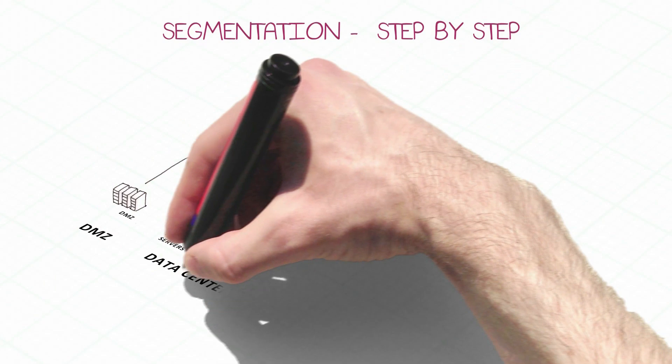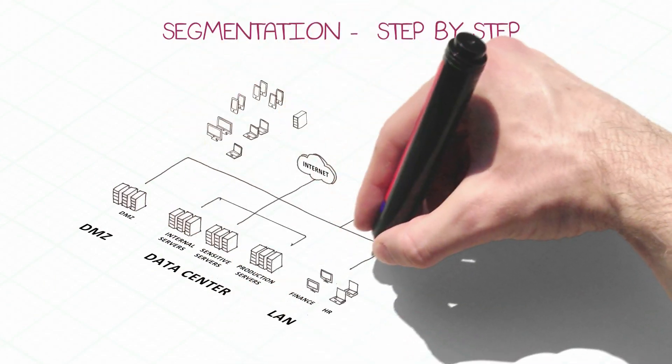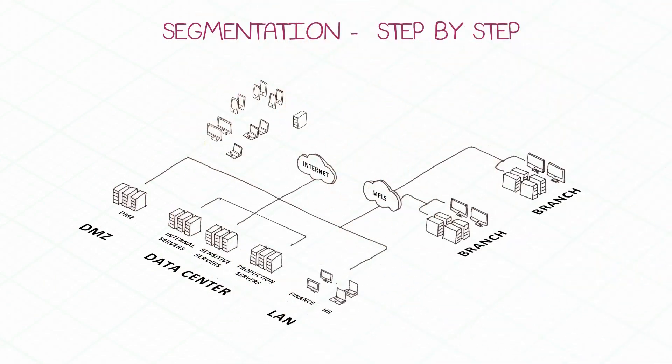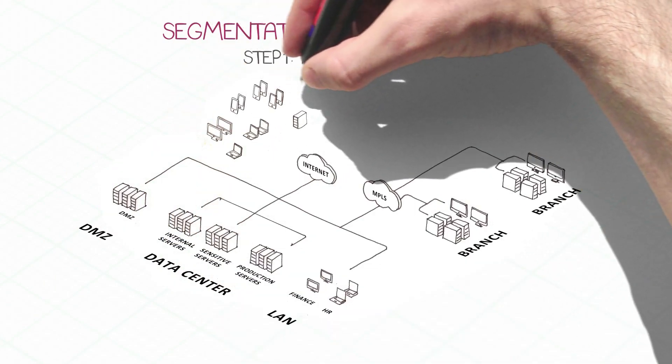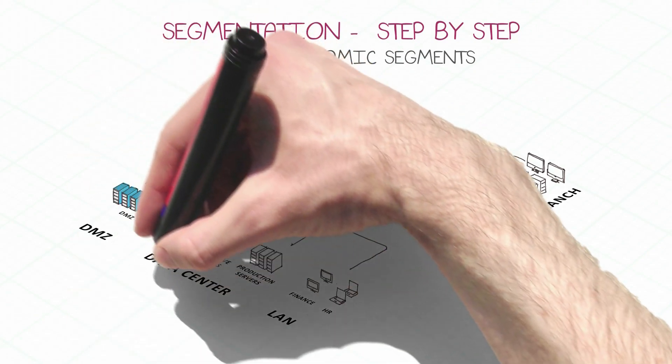Start classifying servers and computers based on their security profile to create basic building blocks called atomic segments.